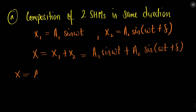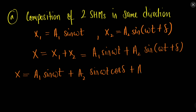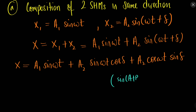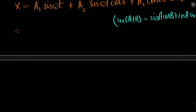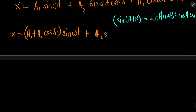Let us simplify further. We can use the formula sin(A+B) = sin A cos B + cos A sin B to expand A₂ sin(ωt + δ). So we get A₁ sin(ωt) + A₂(sin(ωt) cos δ + cos(ωt) sin δ). Further, we can write this as (A₁ + A₂ cos δ) sin(ωt) + (A₂ sin δ) cos(ωt).